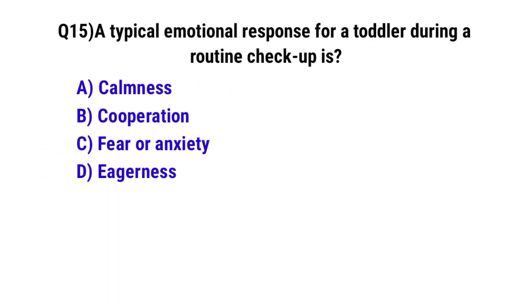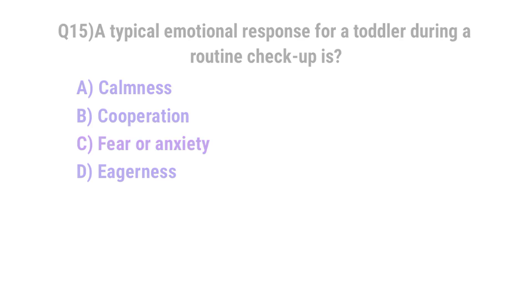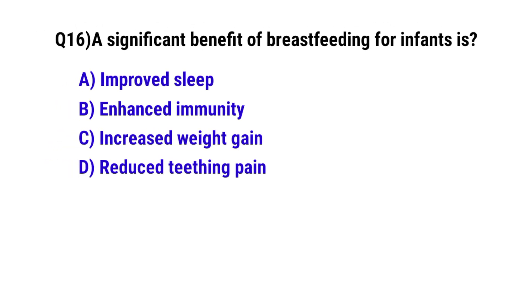Question 15: A typical emotional response for a toddler during a routine checkup is — the correct option is C: Fear and anxiety. Question 16: A significant benefit of breastfeeding for infants is — the correct option is B: Enhanced immunity.